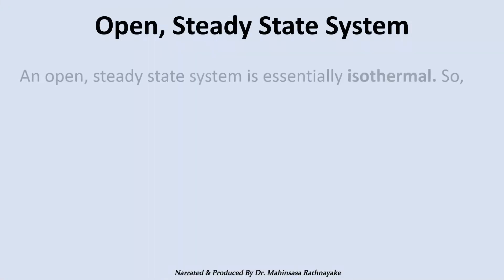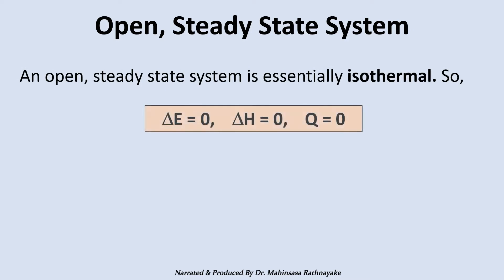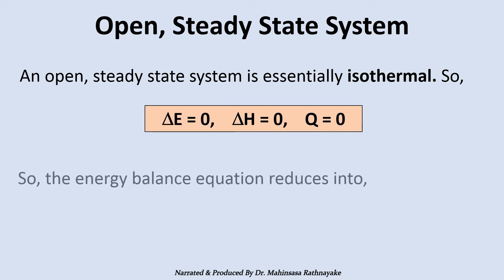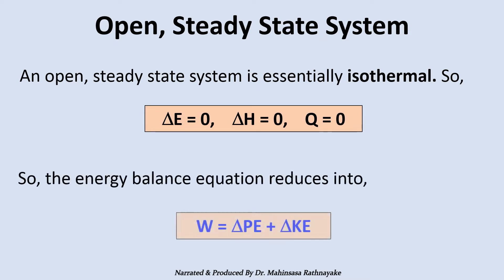An open steady-state system is essentially isothermal. So delta E, delta H, and Q are zero. Therefore, the energy balance equation reduces to W is equal to delta PE plus delta KE.